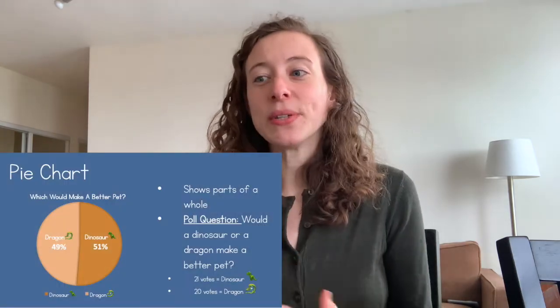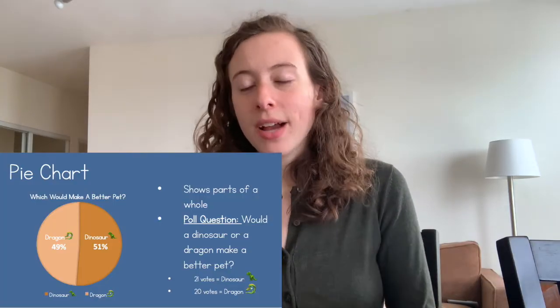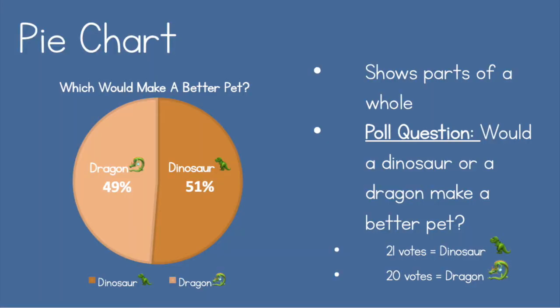For our next graph, we are looking at the pie chart, which shows parts of a whole. I decided to ask: would a dinosaur or a dragon make a better pet? You can see, without even looking at the percentages, that just by looking at the chart they appear pretty even — not exactly half and half, but really close. When you look at the percentages it confirms that: 51% voted for dinosaurs and 49% voted for dragons — 21 votes dinosaur, 20 votes dragon.